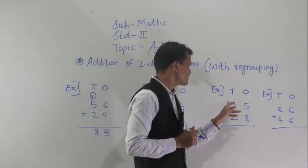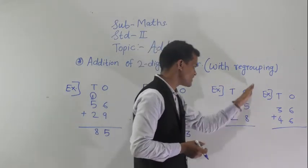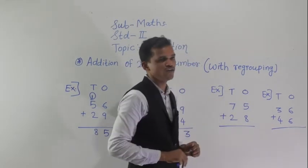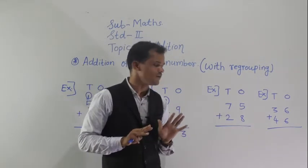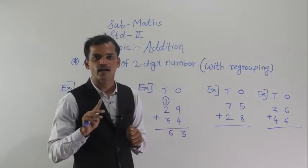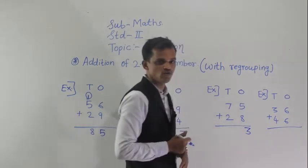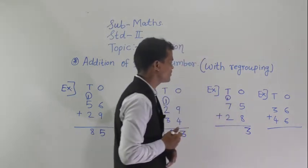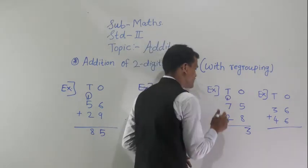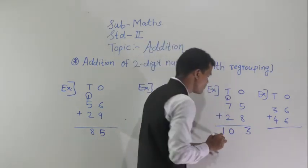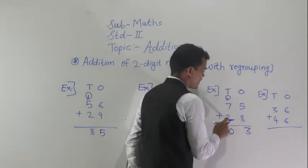Next example: 75 plus 28. First add the ones column: 5 plus 8. After 5, count 8 fingers — 6, 7, 8, 9, 10, 11, 12, 13. So 5 plus 8 equals 13. Write 3 at the ones column and carry 1 to the tens column. Now 7 plus 2 equals 9, and 9 plus 1 carry means 10. So 103 is the sum of 75 and 28.